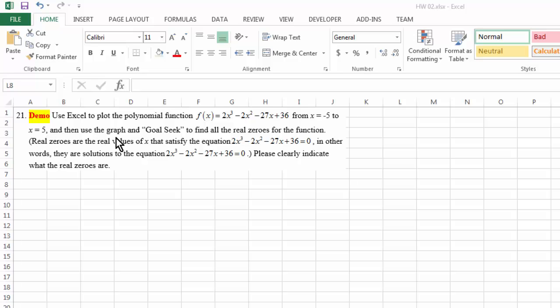After we have obtained the graph, we're going to use that graph and also use Goal Seek, which I introduced before, to find all the zeros to the function. And zeros are simply the solutions to when the function equals to zero. So let's see first how we're going to plot this function.